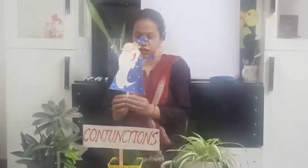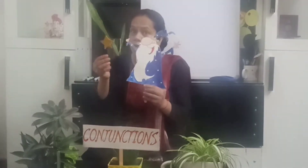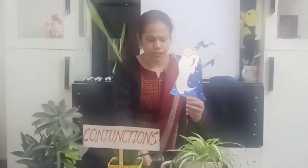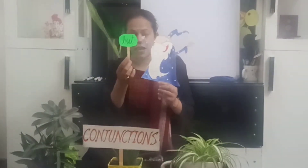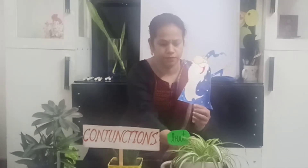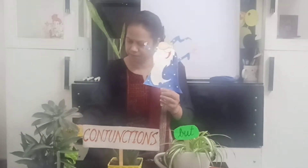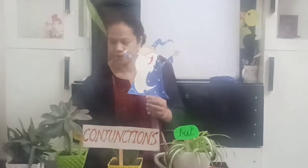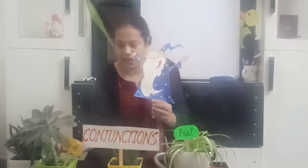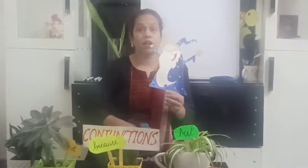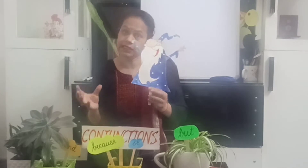So he just took out his magic wand and said 'Abracadabra,' and suddenly some words appeared — like but, and, because, or. So these are the magical words. These words join sentences or words together.